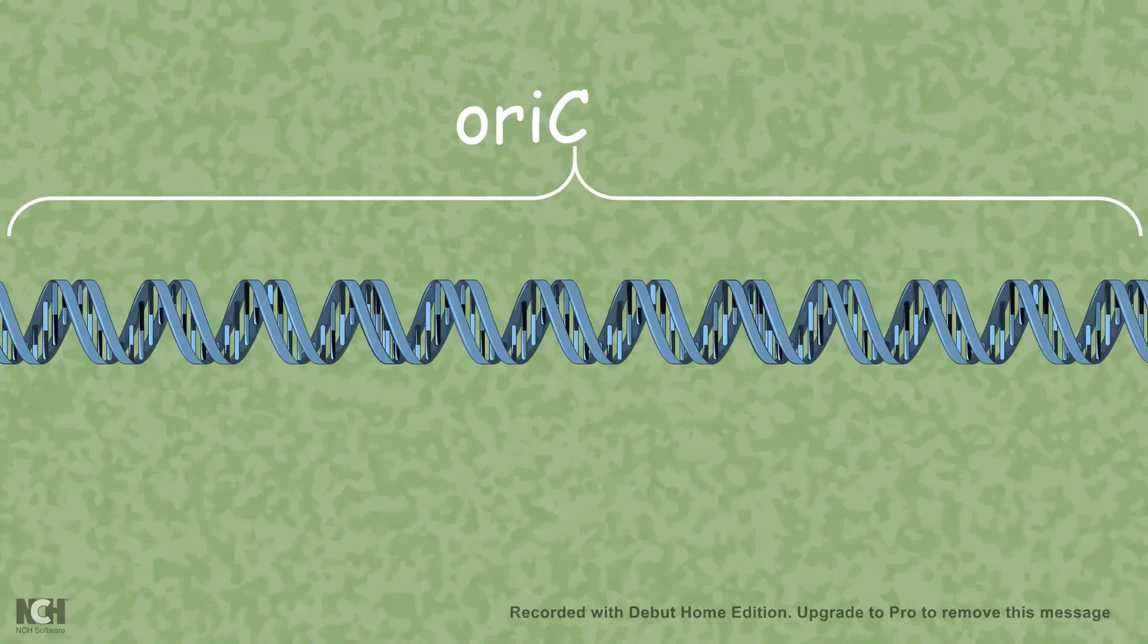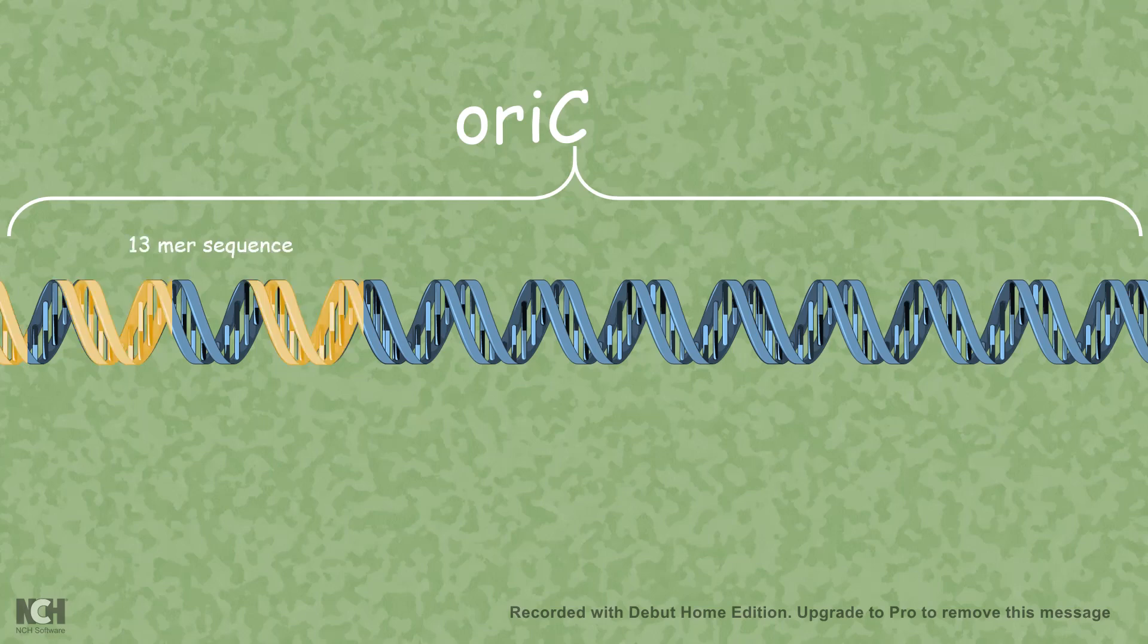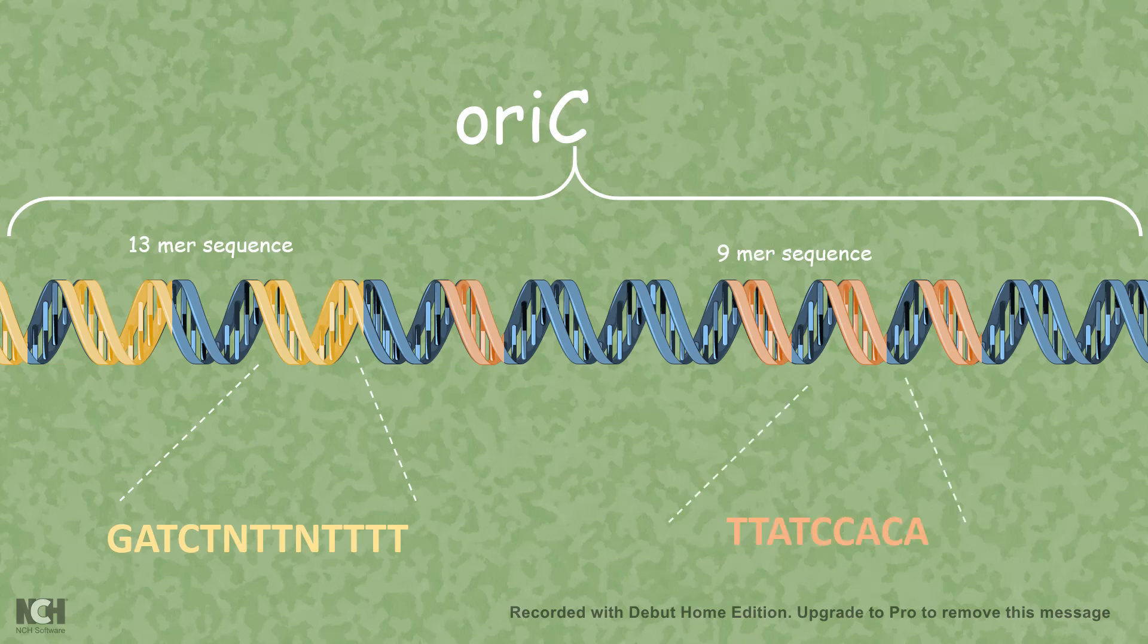Here a 245 base pair region is known as origin of replication or OriC. Looking at the sequences in more detail, we find there are specific island of sequences known as 13-mer repeat sequences and 9-mer repeat sequences. There are four tandems of 9-mer sequences. It turns out that in 9-mer sequences, specific proteins such as DnaA bind.